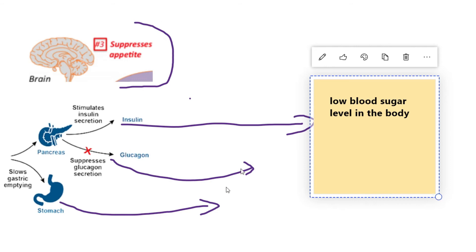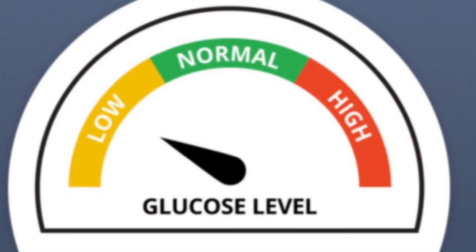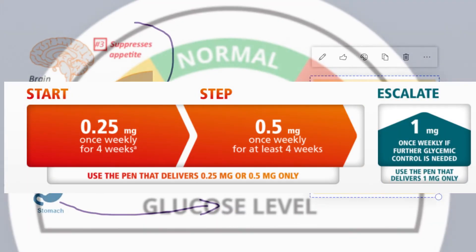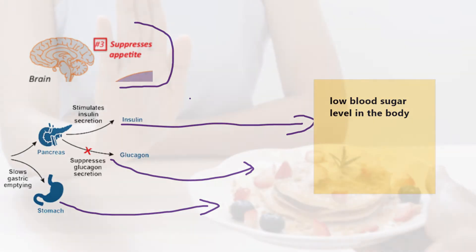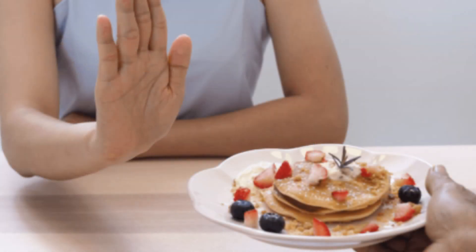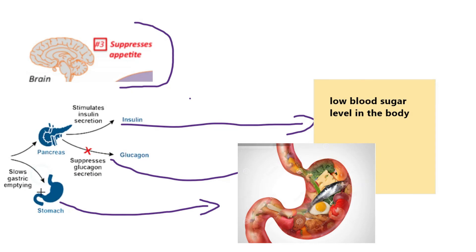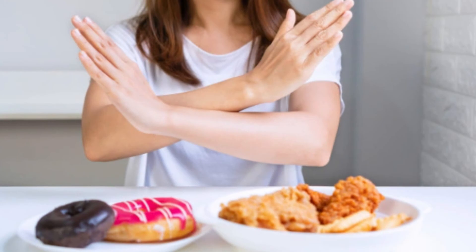Ozempic injection is very good for diabetes type 2 patients because normal sugar level is achieved with a single weekly dose. For weight reduction, it suppresses the appetite and decreases digestion, so you will not want to eat more — you will reduce meal frequency and eat less than usual.